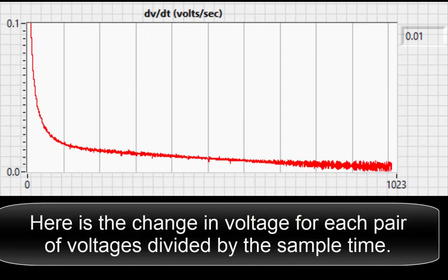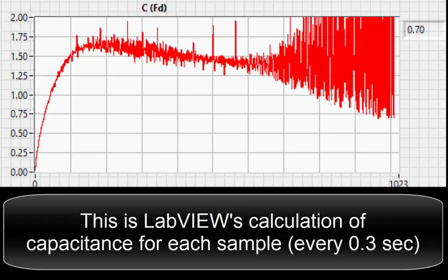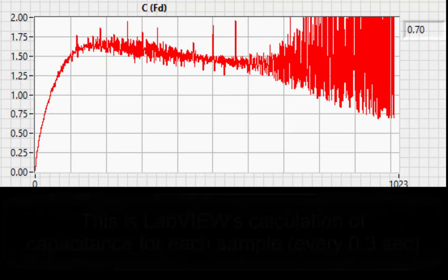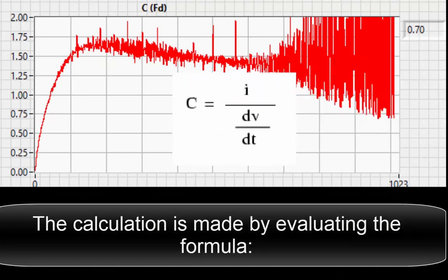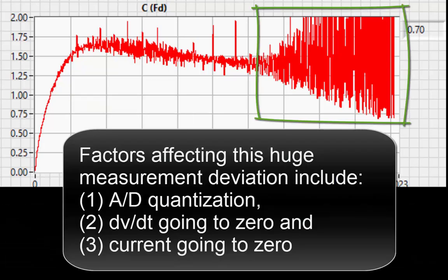Here is the change in voltage for each pair of voltages divided by the sample time. Measurement deviations increase as the change in capacitor voltage becomes smaller. This is LabVIEW's calculation of capacitance for each sample. The calculation is made by evaluating the formula. Factors affecting this huge measurement deviation include A to D quantization, dv dt going to 0, and the current going to 0.